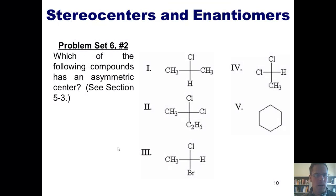This brings us to a wonderful problem. Which of the following compounds has an asymmetric center? Now keep in mind when I'm trying to find an asymmetric center, which is once again also called a stereocenter, a chiral center, or a chirality center, what I'm looking for is a carbon atom with a tetrahedral geometry that is bonded to four different substituents.